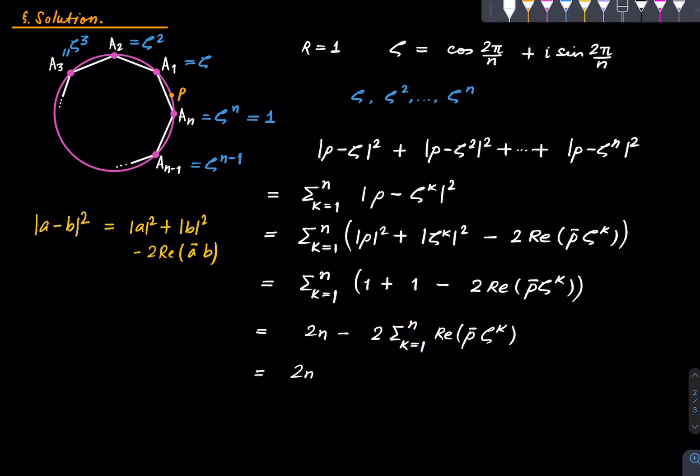But what is that? This is equal to 2n minus twice the real part of Σ(K=1 to n) P̅ζᴷ. Because the reason is this: real part of A plus B is equal to real part of A plus real part of B. That's a very simple thing being used from this step to that step. Further, I'm being very pedantic, this is the real part of P̅ times Σ(K=1 to n) ζᴷ.